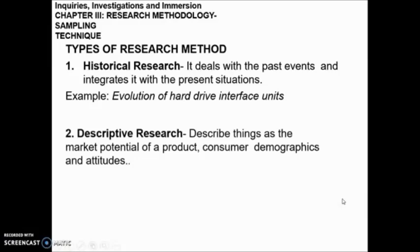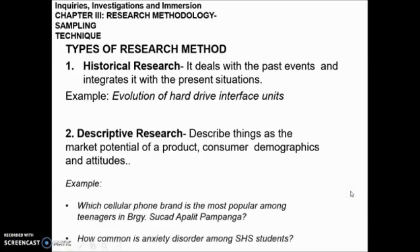Number two is descriptive research — it describes things such as the market potential of a product and consumer demographics and attitudes. Examples include: which cellular phone brand is the most popular among teenagers in Barangay Sucal, Apalit, Pampanga; and how common is anxiety disorder among senior high students. This means that if you are trying to describe an event or determine a particular product, you will need to choose descriptive research.